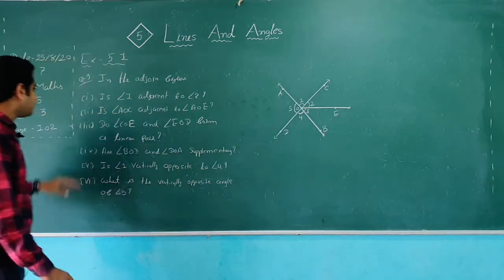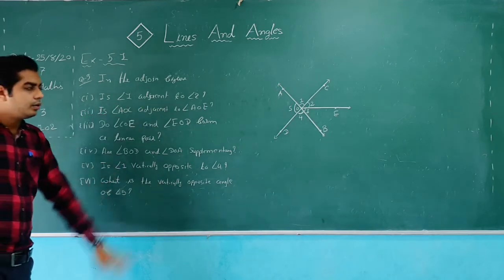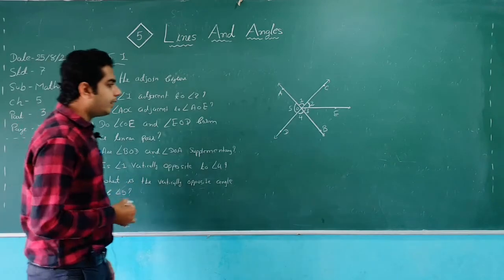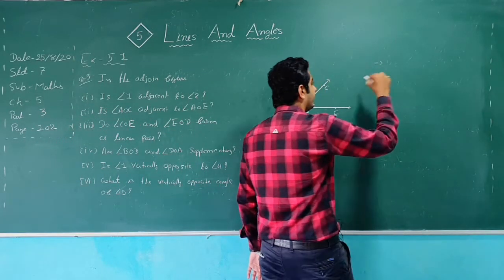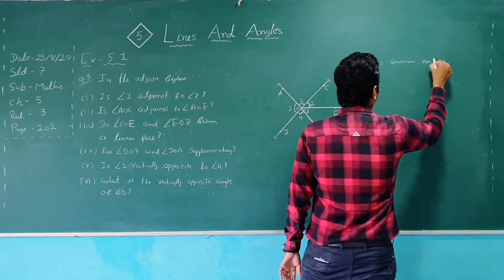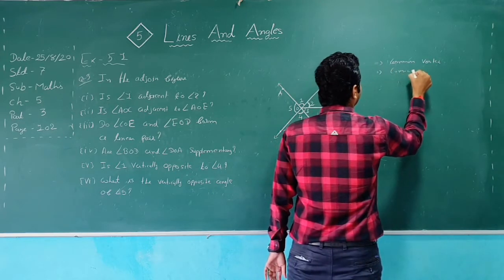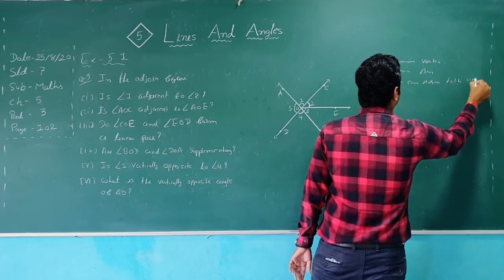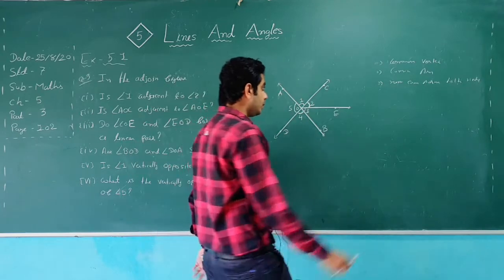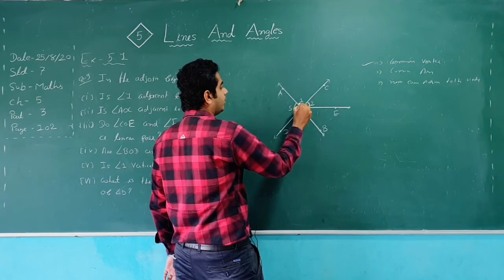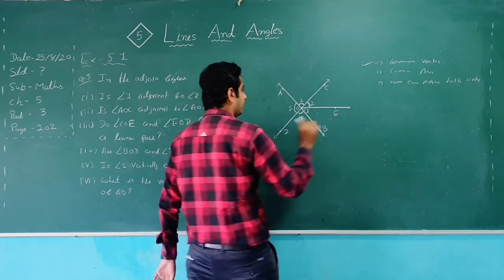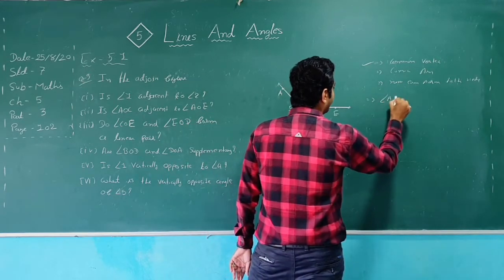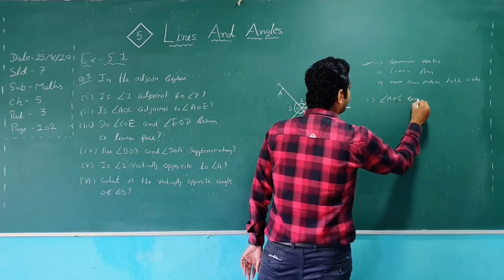First sub-question: is angle 1 adjacent to angle 2? For adjacent angles, we know there are 3 conditions: first, common vertex; second, common arm; and third, non-common arms on either side of the common arm. Checking the first condition — is there a common vertex between angle 1 and angle 2? Yes. First condition fulfilled. Now the second condition — common arm. The first angle is AOC and the second angle is COE.